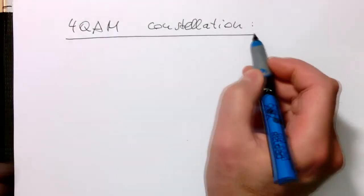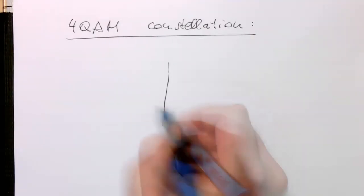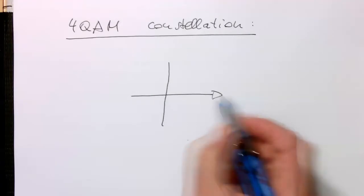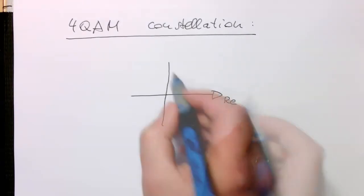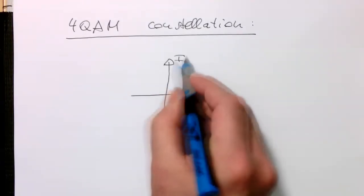So what does that mean? The idea is, if we have our complex coordinate system here again, so that's real and this is imaginary.